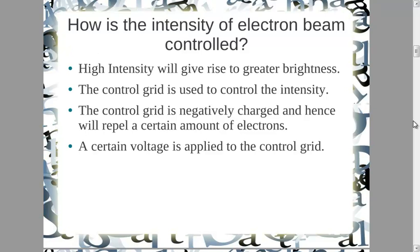High intensity gives rise to better brightness, and the control grid is used to control the intensity. The control grid is normally negatively charged and hence will repel a certain amount of electrons. A certain voltage is applied to the control grid — the amount of voltage determines how many electrons are repelled. If the voltage is high, it's going to repel more electrons. If the voltage is lower in value, it's going to repel fewer electrons.